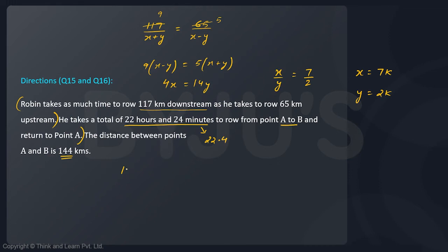So let's make another equation. First of all downstream: 144 kilometers divided by speed downstream which is X plus Y, 7K plus 2K that is 9K, plus 144 kilometers upstream which will be 7 minus 2 which is 5K, and the total time taken is 22.4. So 144 upon 9 is 16 upon K plus 144 upon 5 is 28.8 divided by K and that equals 22.4.